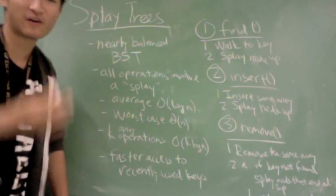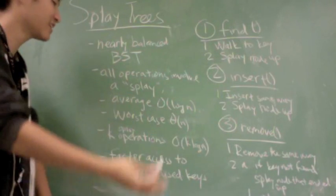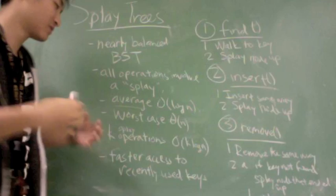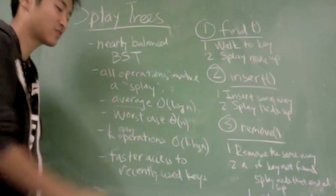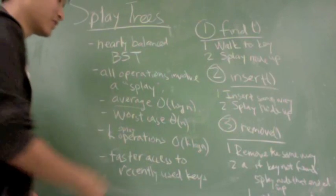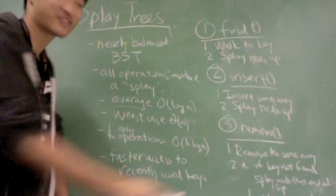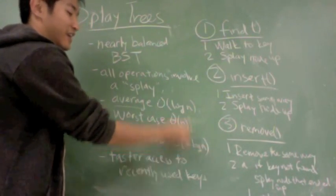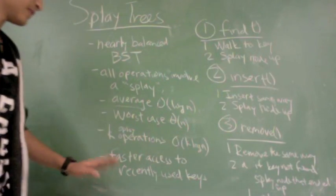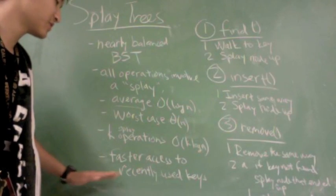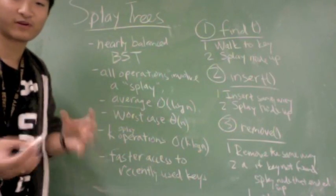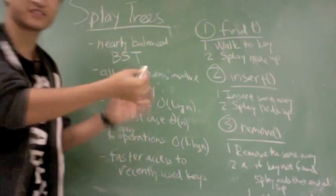All operations involve a splay, which I'll explain later, and average log n time, but this log n usually is very fast. Worst case, of course, is theta n, but for any k splay operations with k reasonably large, you can expect the runtime in total to be k log n, even in the worst case. What splay trees allow you to do is access the keys that you've been recently working on much faster, and we'll see why.